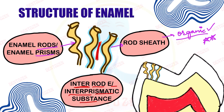The direction of hydroxyapatite crystals in enamel rods is different from that in the interrod enamel. So altogether we have three things in the structure of enamel: first, enamel rods (also known as enamel prisms), which is the main structural component; second, interrod enamel or interprismatic substance, present in between the rods; and third, the rod sheath, which is the organic component surrounding the enamel rods.